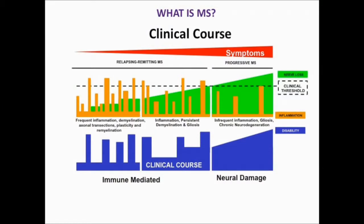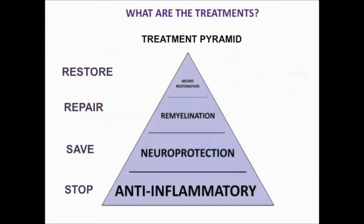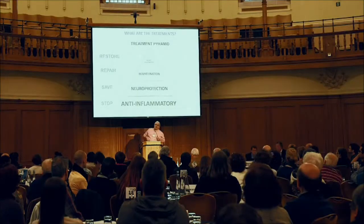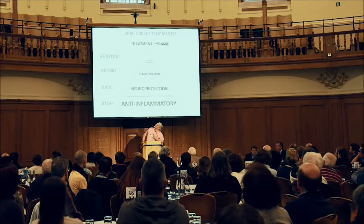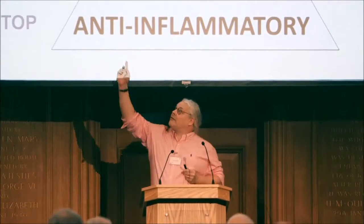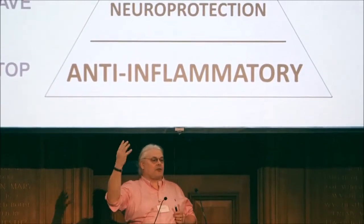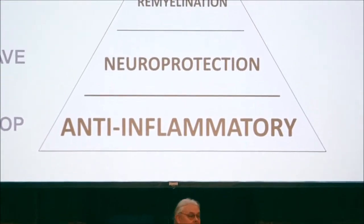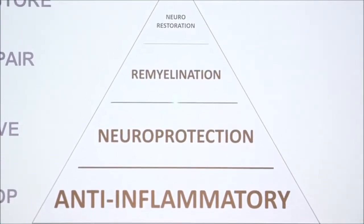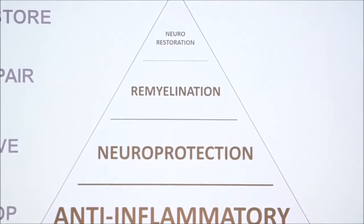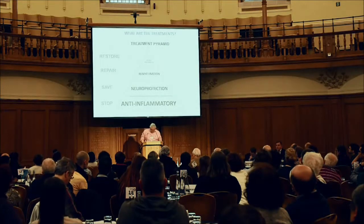So how do we approach the treatment of MS? What we really want to do is stop the inflammation, save the nerves that are demyelinated, and then think about repair — remyelination. In many cases, if we just stop the inflammation, the natural repair mechanisms will actually repair the damage, so we don't necessarily have to think about stem cells — though we are thinking about stem cells — and in the future, hopefully, we'll be able to repair damaged nerves.